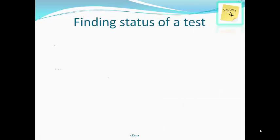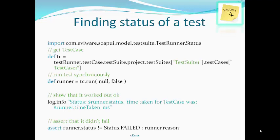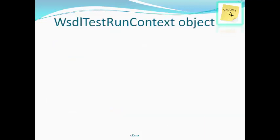To find the status of a test, first import the test runner status, then get the test case using testRunner.testCase. Run the test case synchronously using the run function. Write to the log using runner.status to get the status — whether the test was successful or a failure. If the test fails, you can also find the reason using runner.reason.